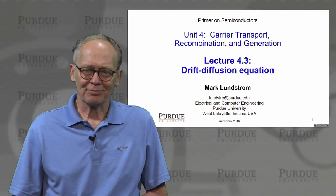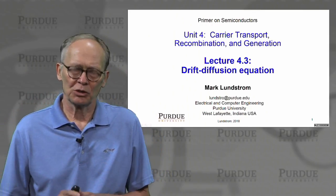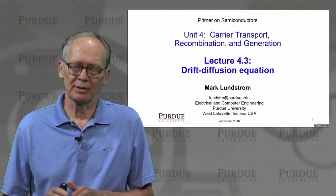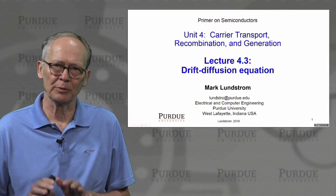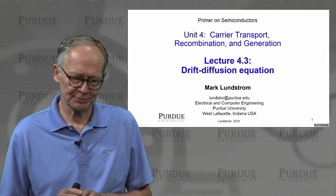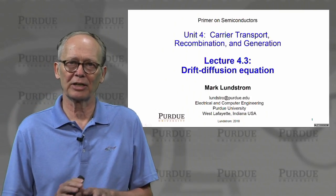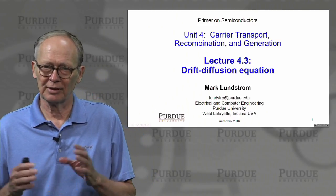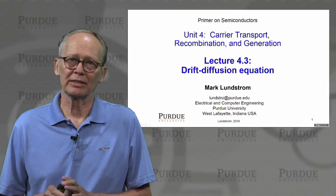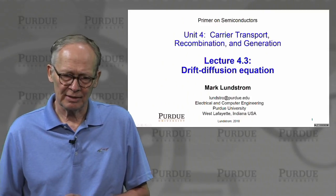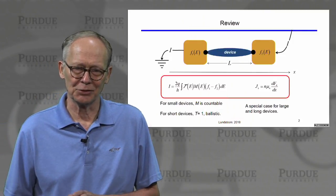Welcome back. In unit four, we're talking about the behavior of free carriers, electrons, and holes under non-equilibrium conditions. The first three lectures are about carrier transport — how carriers flow under the influence of an applied bias. This lecture is the last of those three lectures. The topic is the drift-diffusion equation, so let's dive into it.